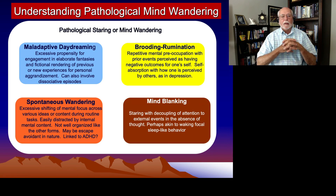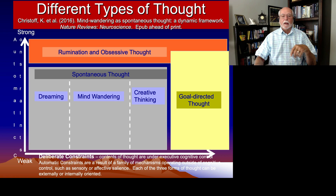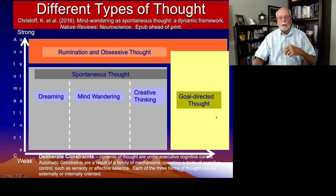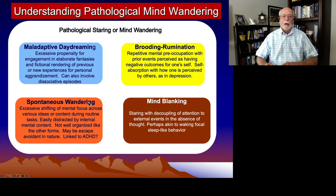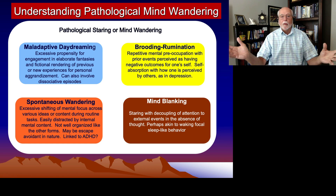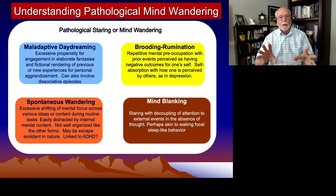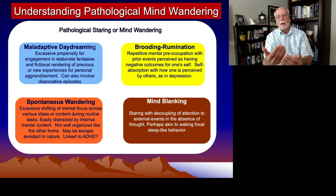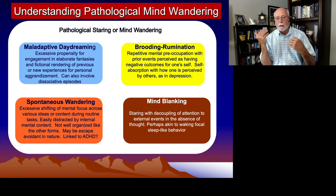Now, what is pathological mind-wandering? It's too much of this that is being too automatic rather than deliberate. What is happening in the mind could be one of four things, or all of them at different times. The individual has disengaged and dissociated from the environment — what's going on in the mind? Not sure. We need more research on this.